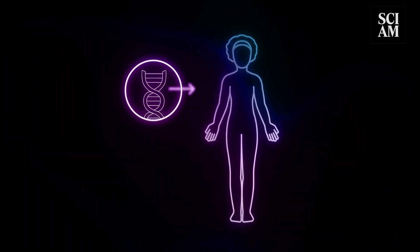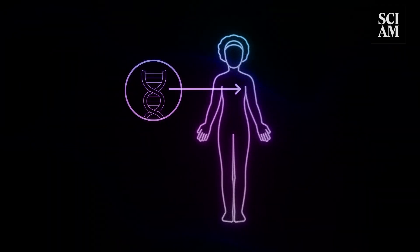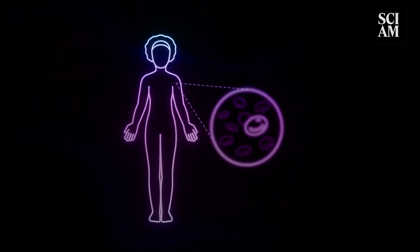Then, the gene-edited stem cells are put back into the patient. The corrected stem cells produce healthy hemoglobin and red blood cells.